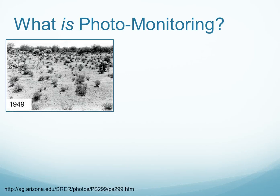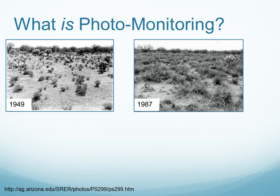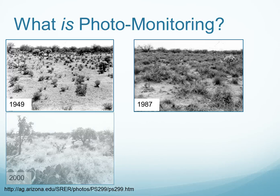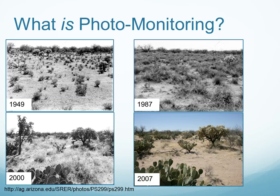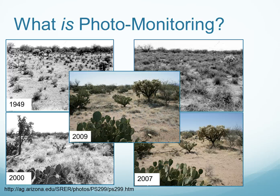Photo monitoring is also extremely useful when we want to show long-term trend or long-term change. Here we see a series of photographs taken at the Santa Rita Experimental Range in southern Arizona. The first photograph taken in 1949 shows very little grass cover and some cholla, some mesquite, and other sub-shrubs. By 1987, the cover of cholla and shrubs had increased quite a bit. By the year 2000, we can see an invasion by Lehmann lovegrass, Eragrostis lehmanniana. However, by 2007, there's quite a decrease in the amount of Lehmann lovegrass because of subsequent drought. And by 2009, there has been some grass recovery, but it's predominantly an annual grass.